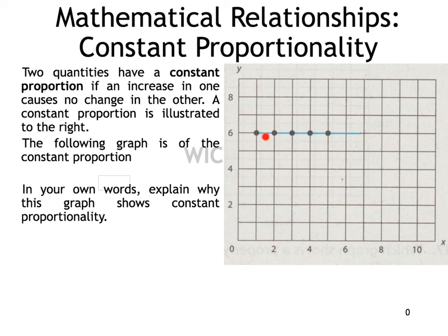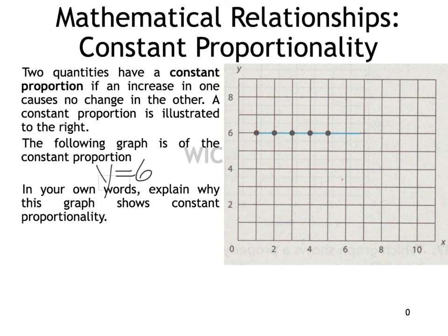Then we have constant proportionality, which is almost the same as no relationship at all. This graph follows the equation y = 6 — there's no mention of x, so there's no relationship. An increase in the x-axis from 0 to 5 causes no change in y. The slope is 0 and the slope is constant.